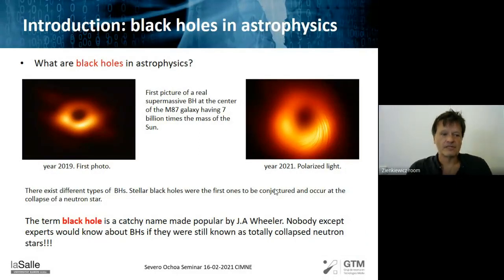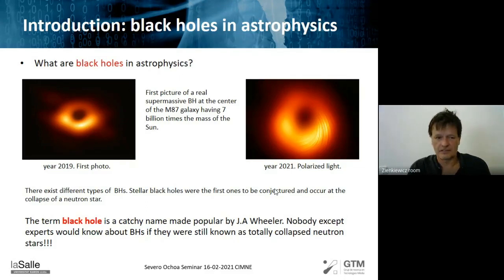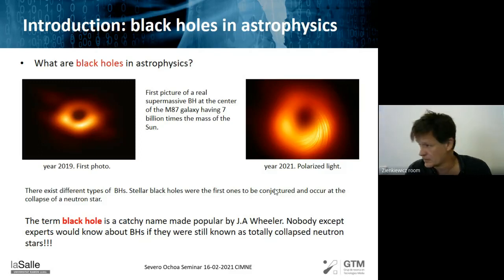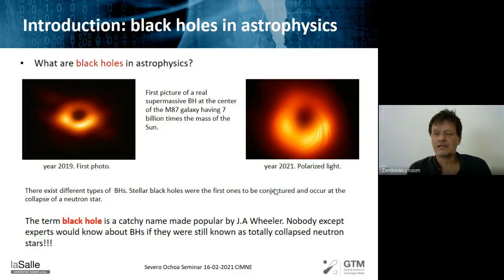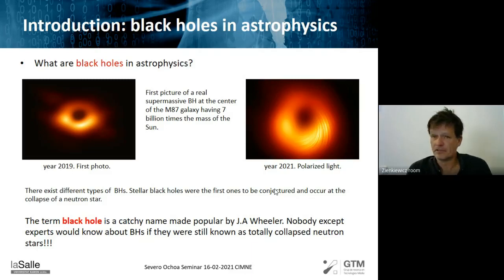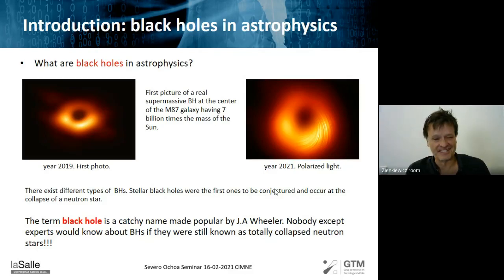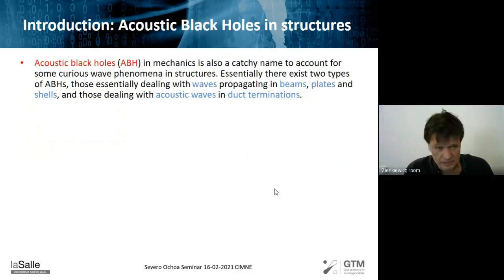You may be familiar with the 2019 picture — the first picture of a real black hole. What we are seeing is the accretion disc of matter falling inside the black hole, corresponding to the supermassive black hole at the center of the M87 galaxy, which has seven billion times the mass of the sun. Different types of black holes exist, but the first predicted ones were due to the collapse of large neutron stars. They were originally known as totally collapsed neutron stars until physicist Wheeler proposed the term 'black hole,' which became a catchy name that almost everybody has now heard of. That's a black hole in astrophysics in two minutes — now let's see what black holes in mechanics are.